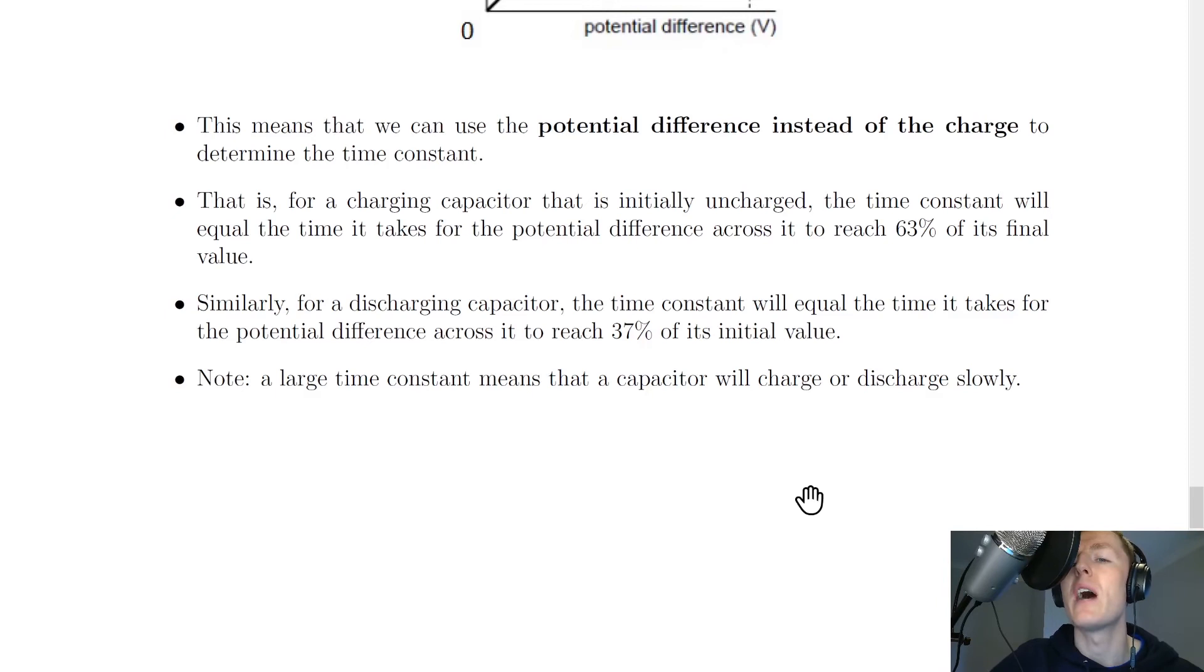It's also worth pointing out that if you're given a graph of potential difference against time and you're asked to work out the time constant, if it's a discharging graph, it might remind you of the half-life graphs from National 5 Physics, where you have an exponentially decreasing curve over time. You can work out the time constant from your graph in the exact same way that you could work out the half-life from a graph of activity against time. But you can get an idea of how this is done in the worked example videos.